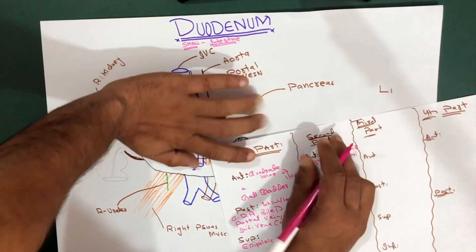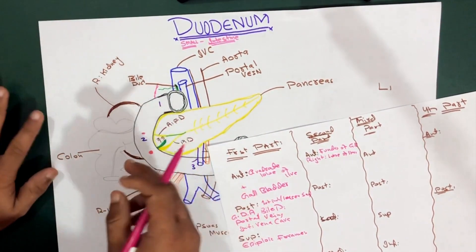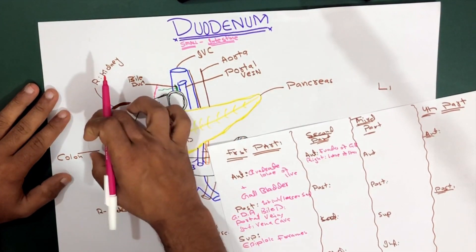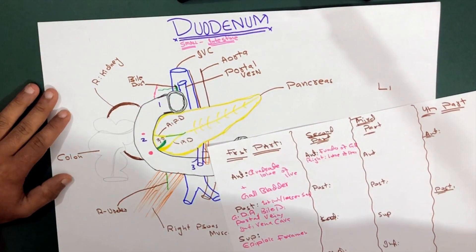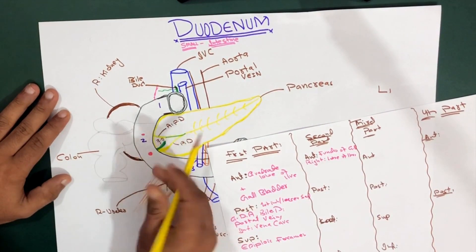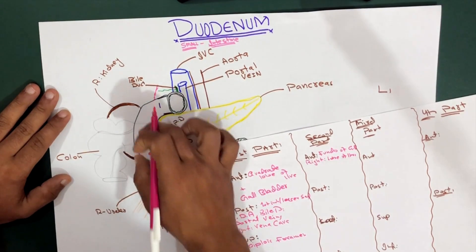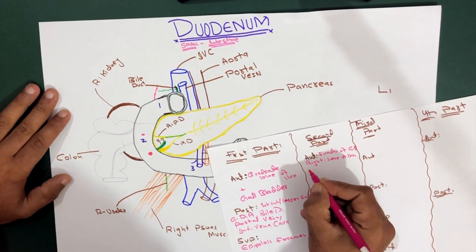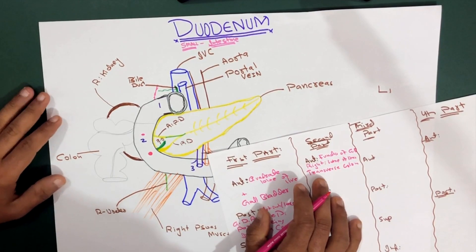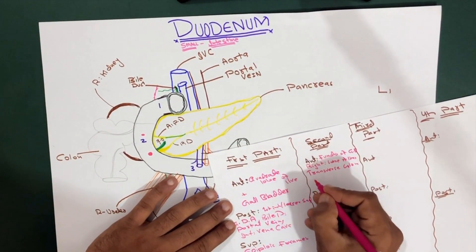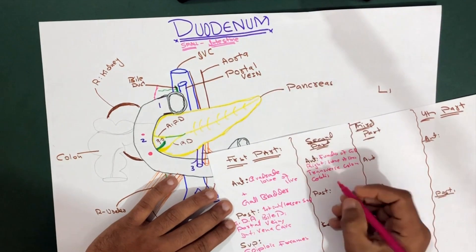The third anterior structure is the transverse colon. You can see the ascending colon and the transverse colon - the transverse colon covers over the anterior part of the second part of the duodenum. We also have the coils of jejunum, which are on the upper side, and the coils of ileum on the lower side anteriorly.